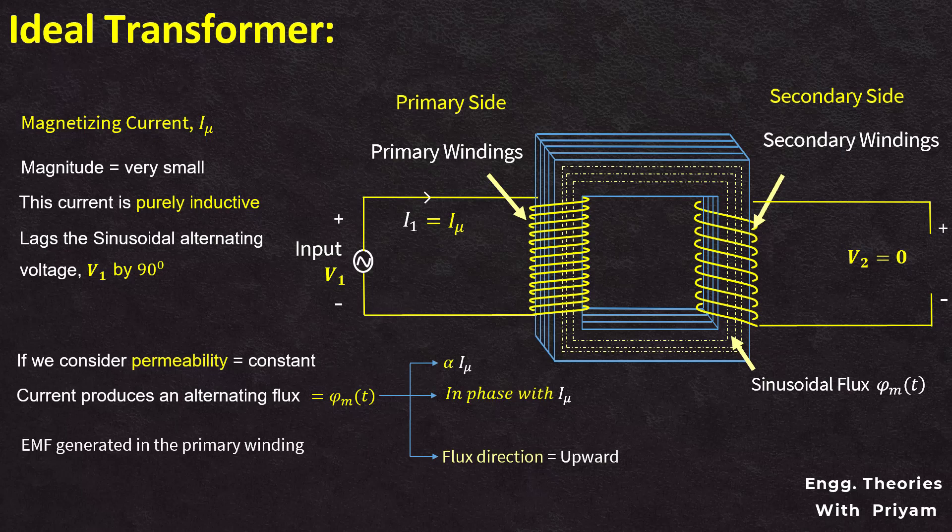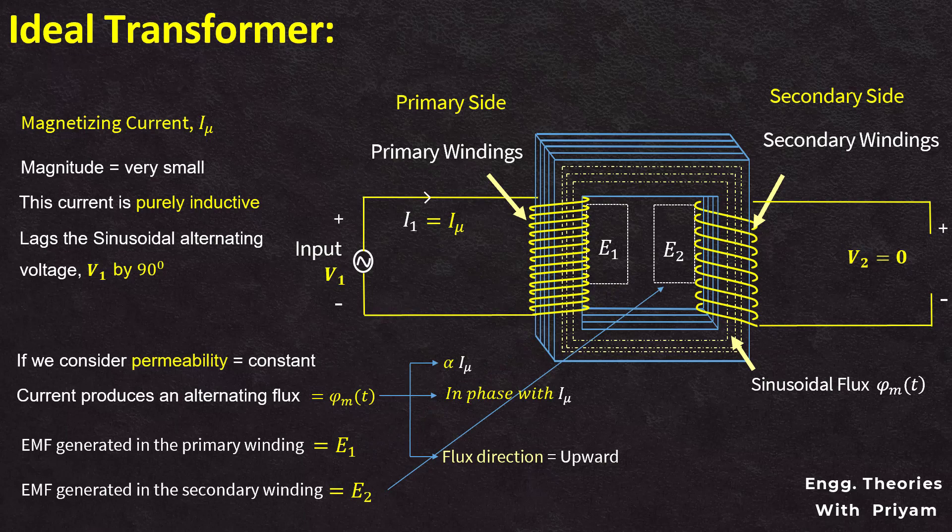Due to this flux linking, an induced EMF is generated in each winding. The EMF generated in the primary winding is known as the self-induced EMF, or e1, due to self-induction. The EMF generated in the secondary winding is known as the mutually induced EMF, or e2, due to mutual induction.